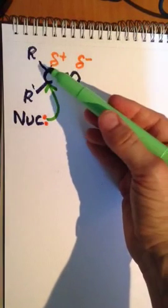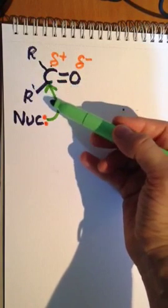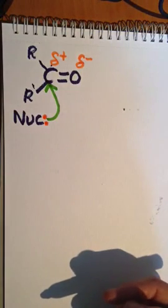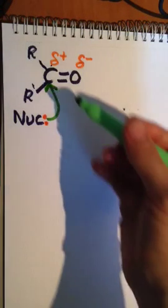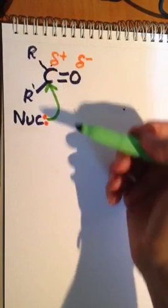Now here we can see we would have potentially one, two, three, four, five bonds and therefore something's got to give because we know carbon can only have four bonds.